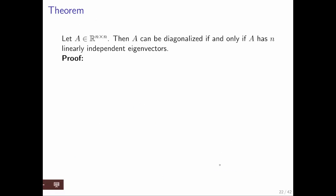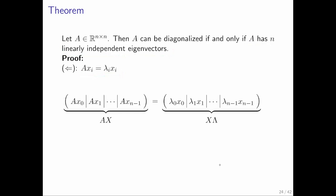If we now want to prove it in the other direction, we say, what if A has n linearly independent eigenvectors? Then we know that this is true for i equals 0 to n minus 1.